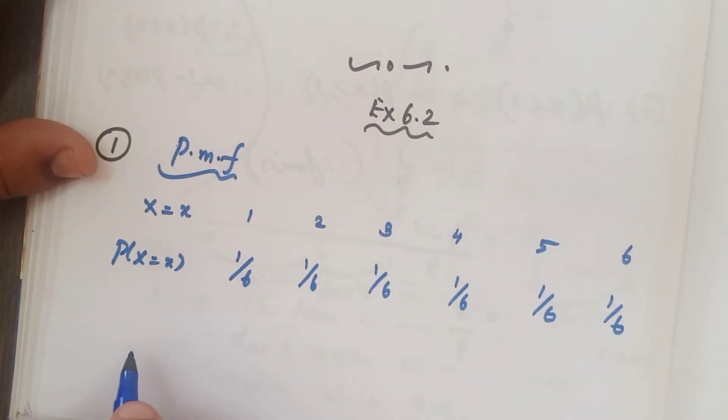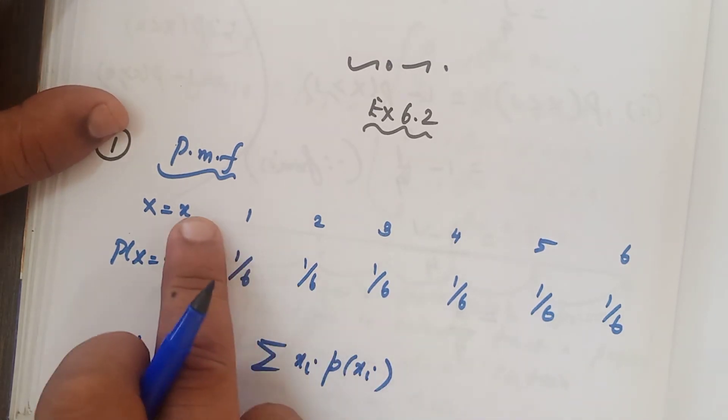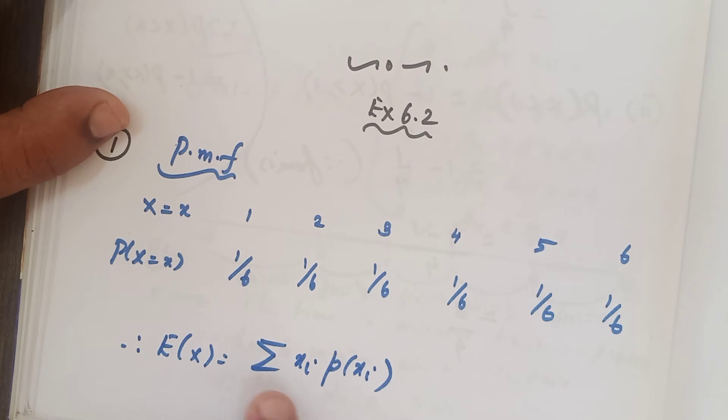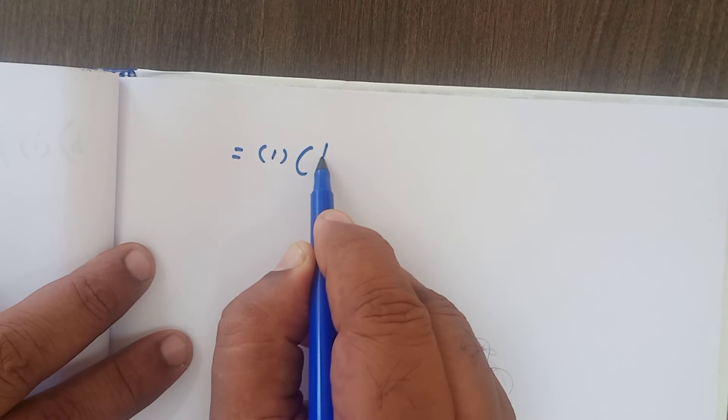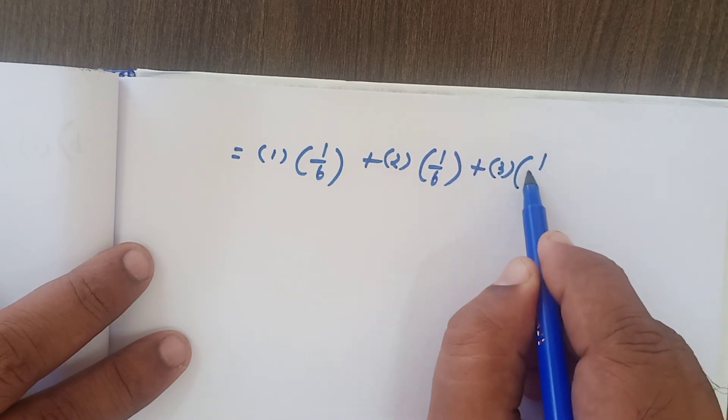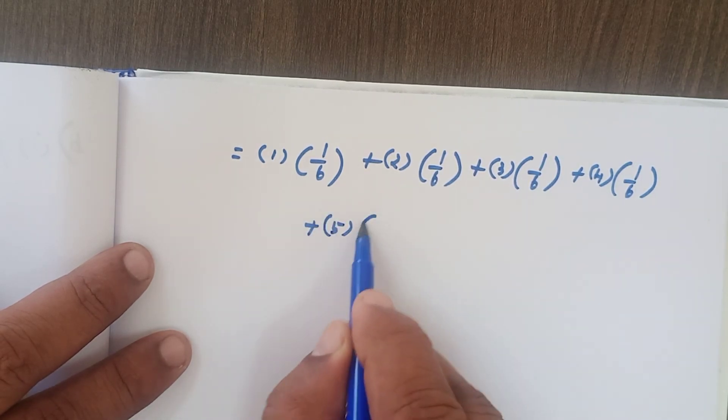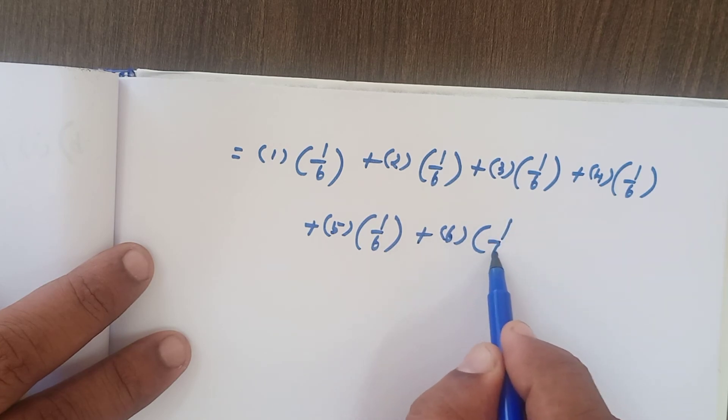Now I am going to find out the expected value of x. That is the question. Expectation of x formula: sigma x i p of x i. This is x values, this is probability values. Both should be multiplied and that should be added. Sigma means summation. Very simple. 1 into 1 by 6 plus 2 into 1 by 6, that is equal to write over here: 1 into 1 by 6, 2 into 1 by 6, 3 into 1 by 6, 4 into 1 by 6, 5 into 1 by 6, finally 6 into 1 by 6.